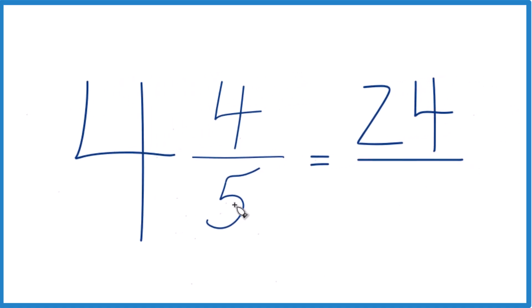So that's the numerator, and we just bring the 5 across, that's the denominator. And 4 and 4 fifths, that equals 24 fifths.